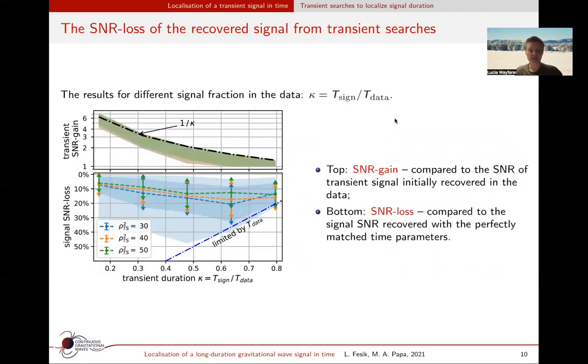Let's summarize the results of the SNR recovery from our searches for different signal fractions in the data, which we call kappa. Kappa is a fraction between the signal duration and the data duration. The top plot shows the recovered SNR normalized by the SNR of a transient signal, the initially recovered SNR gain, which shows how much one can improve the results by applying the transient searches. The black curve represents the expected maximum gain.